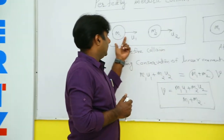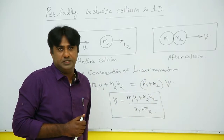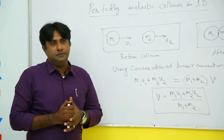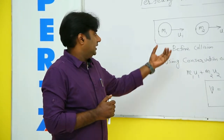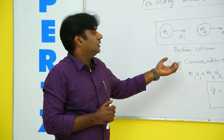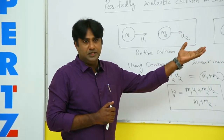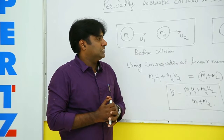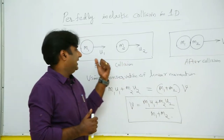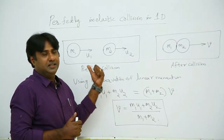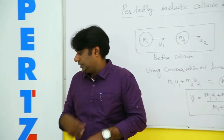Given the initial velocities and masses, we can easily find the velocity of the bodies after the perfectly inelastic collision. However, in this collision it is seen that there is a loss of energy. Initially the first body has kinetic energy of (1/2)*m1*u1² and the second body has (1/2)*m2*u2². After collision they have kinetic energy (1/2)*(m1 + m2)*v², and this final energy is less than the initial energy.